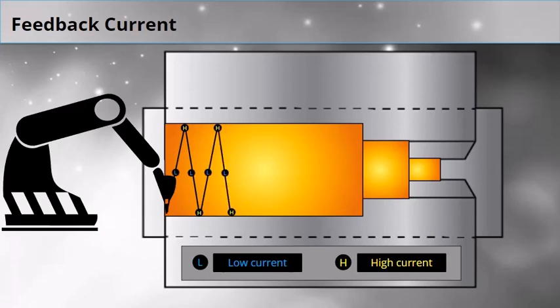The cycle repeats as the robot welds back and forth, constantly adjusting to the feedback current.